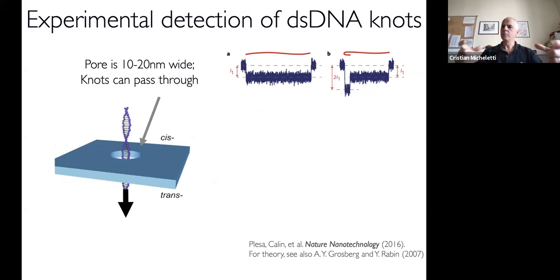Let me tell you how we used coarse-grained models to complement the insight from these experiments. First, the phenomenology. They use a very wide pore, 10 nanometers in diameter. DNA is 2.5 nanometers in diameter, so these are pores much wider than your rope.